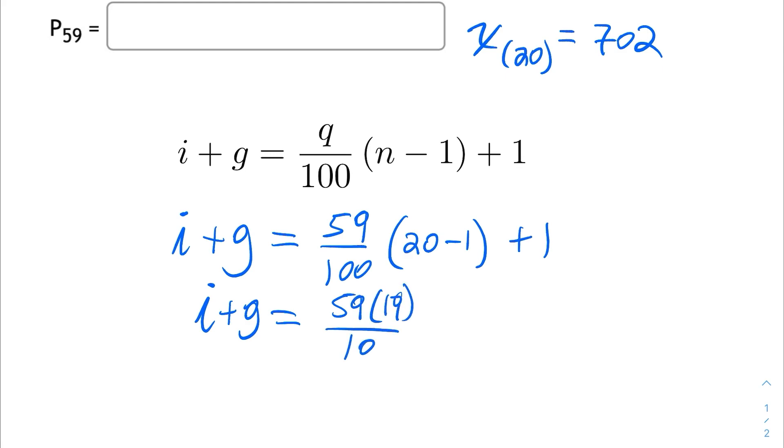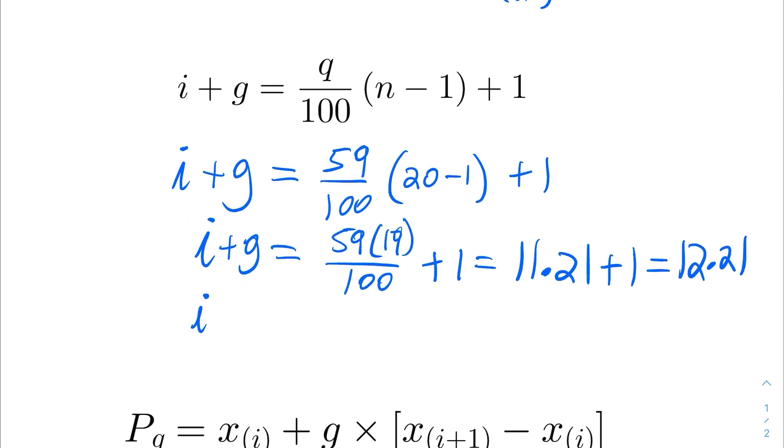I believe that 59 times 19 over 100 amounts to 11.21, and when I add 1 to that, I get 12.21. So, the value of i plus g is equal to 12.21.